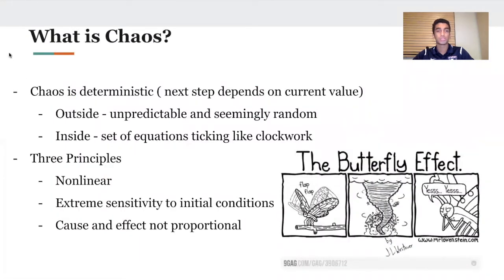And what is chaos? Chaos is deterministic, which means its next step depends on its current value and there's a set of rules guiding how the system develops over time. On the outside, it may appear unpredictable and seemingly random, but on the inside, there's a set of equations ticking like clockwork, determining how the system progresses. Three main principles of chaos are a system being nonlinear, extreme sensitivity to initial conditions, and cause and effect not being proportional.